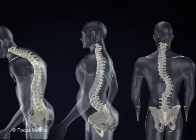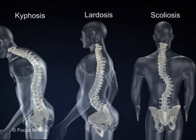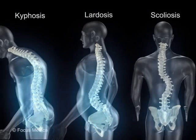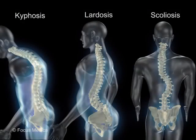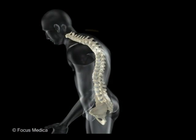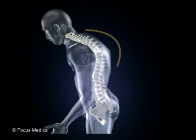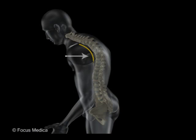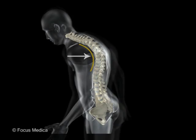The curvatures of the vertebral column are sometimes exaggerated due to congenital or pathological causes. These exaggerated curvatures include kyphosis, common in the thoracic region and seen as an exaggerated anterior concavity of the vertebral column.